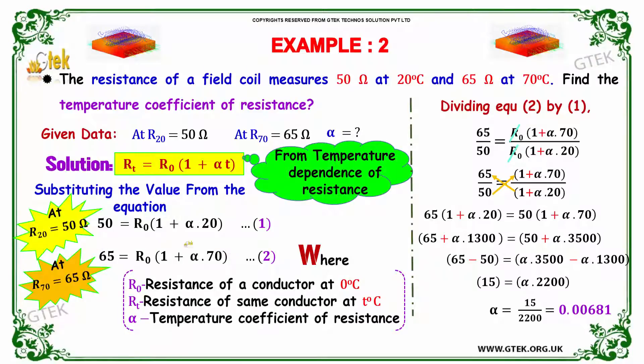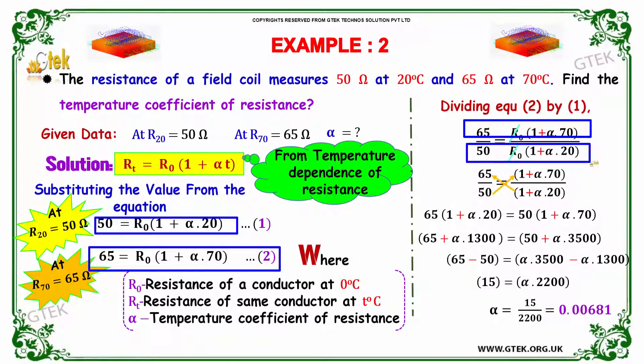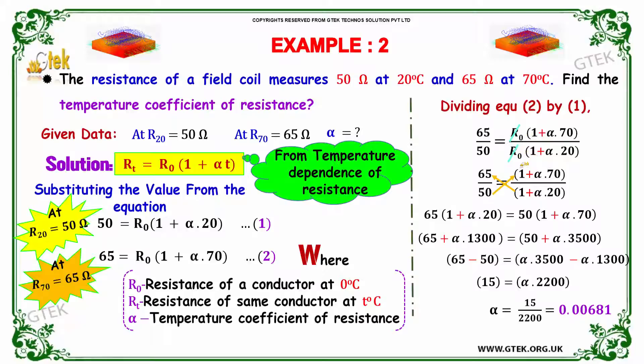So dividing 1 and 2, as here, you got 2 divided by 1. So you got equation 2 in the numerator and you got equation 1 in the denominator. So solving this equation, you will be getting R_0 R_0 is cancelled.